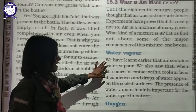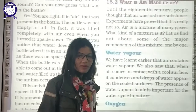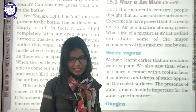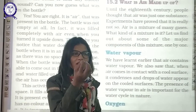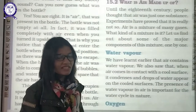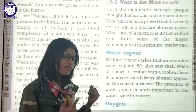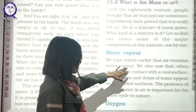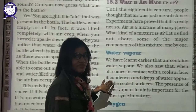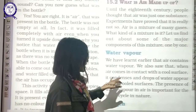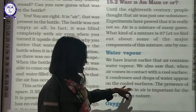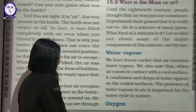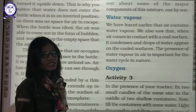The very first component is water vapor. We have learned about the water cycle in the water chapter. During the evaporation stage, water is converted into gaseous form as water vapor, and this water vapor is always present in the atmosphere. Whenever air comes in contact with a cool surface it condenses and appears as water on that surface. The presence of water vapor in air is important for the water cycle in nature.